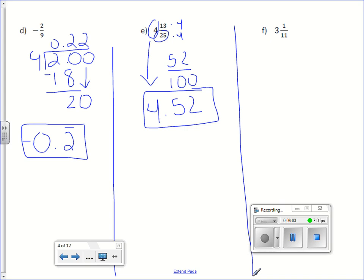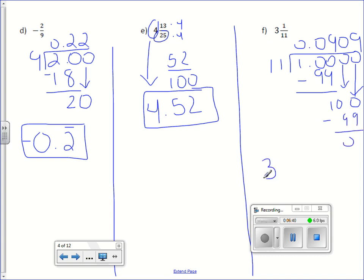It only works for certain fractions. You could always divide as well. Letter F, 3 and 1/11. Again, I'm just going to focus on 1/11 right now. 11 goes into 1, 0 times. Goes into 10, 0 times. Goes into 100, 9 times, which is 99. Subtract and get 1. Goes into 10, 0 times. Goes into 100, 9 times. And we've got ourselves a repeating decimal. 3 is our whole number. So 3.09 repeating. And since both digits repeat, we put that bar over both the 0 and the 9.